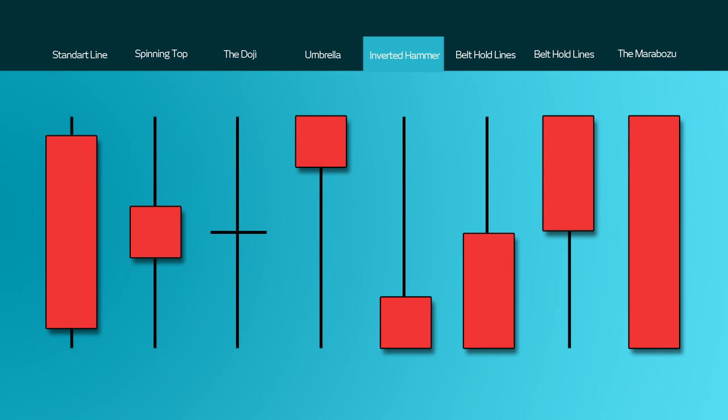After a decline, the long upper shadow indicates buying pressure during the session. You would need confirmation after an inverted hammer — followed by a gap up or a long green candlestick with heavy volume — to give you a bullish confirmation. For the shooting star, the opposite is true: it will come at the top of an uptrend, and you will seek a long red candlestick to confirm that a decline is about to take place.